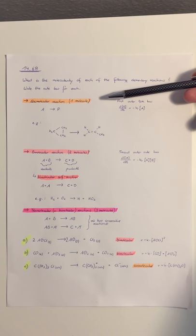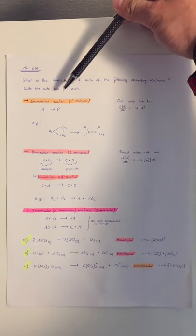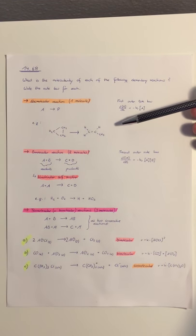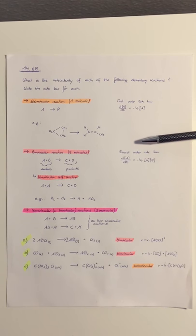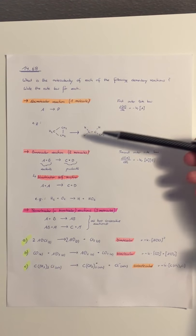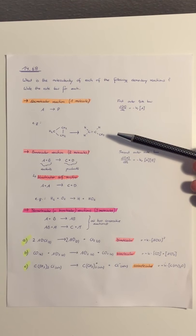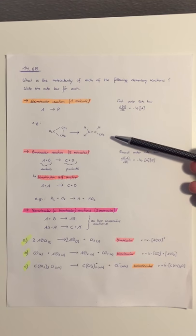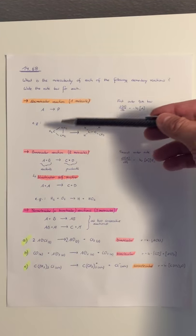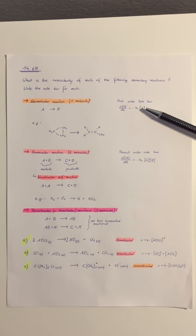We have one molecule and it reacts to another form of the molecule. For example, we got cyclopropane and it reacts to propene, and this unimolecular reaction is a first order rate law as you can see here.